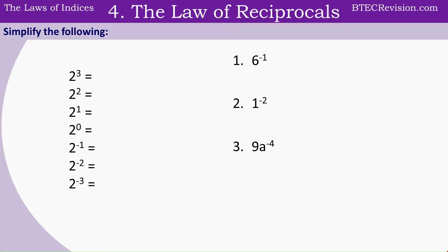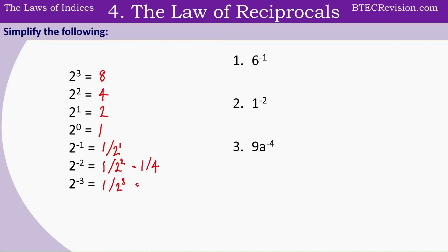Now let's look at the next law. For 2 to the power of 3, that's equal to 8. Then 2 to the power of 2 is 4, and 2 to the power of 1 is 2, and any number to the power of 0 is always equal to 1 — this is actually the fifth law. Looking at a negative power, this is going to be the reciprocal. So we would write this as 1 divided by 2 to the power of 1. When we have a negative power we write 1 divided by that number raised to the positive power. For example, 2 to the power of negative 2 is 1 divided by 2 to the power of 2, which is equal to 1 over 4. And 2 to the power of negative 3 is 1 divided by 2 to the power of 3, which is equal to 1 over 8.